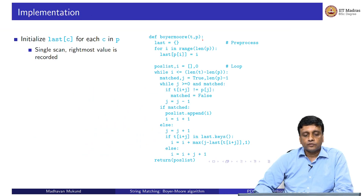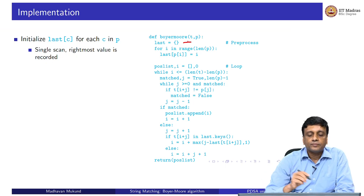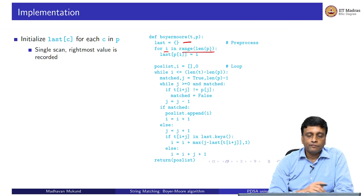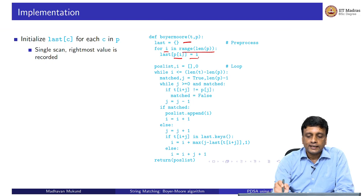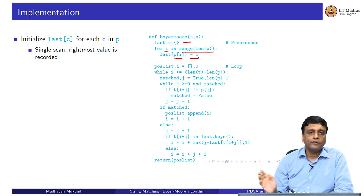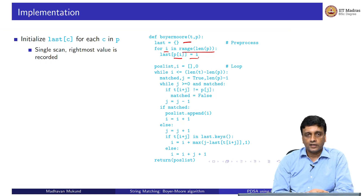Let us look at an implementation. First we set up the dictionary which tells us the last occurrence of every character in the pattern. We start with an empty dictionary and then for every position in the pattern, we update the 'last' entry for that character to be its position. Going from left to right, the rightmost position will be recorded in 'last', which is what we want.